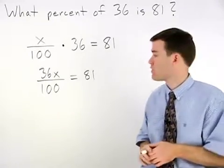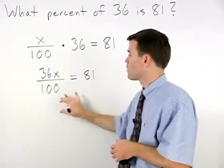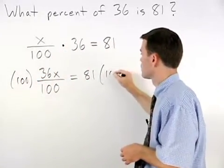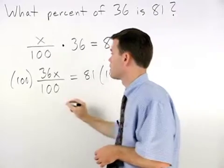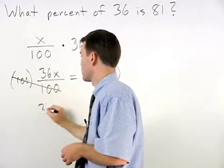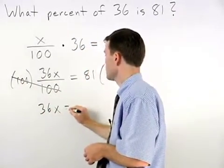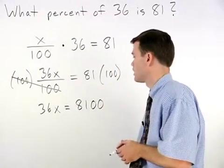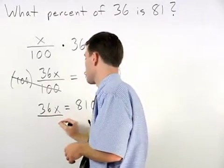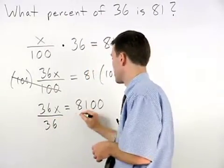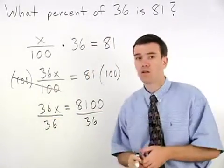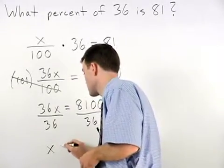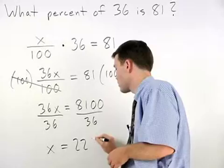To get rid of the fraction, we multiply both sides by 100, and we have 36x equals 8100. Dividing both sides by 36, you can use a calculator to find that x equals 225.